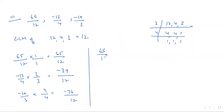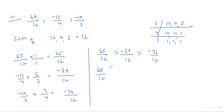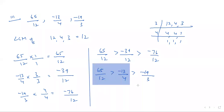So the ordering is: 65/12 is the greatest, then −39/12 is smaller, and −76/12 is the smallest. Writing back in original form: 65/12 is the greatest, then −13/4, and the smallest is −9/3. So that was all about Part 3 of Question Number 8 — this is our answer.